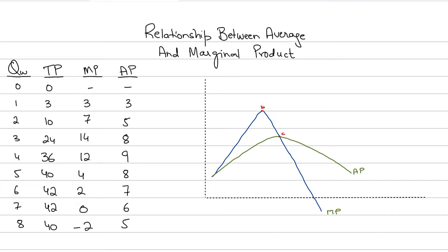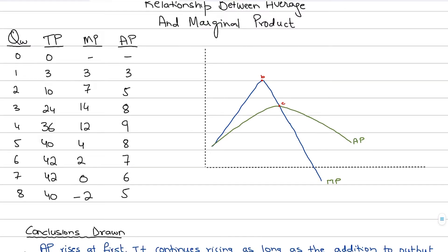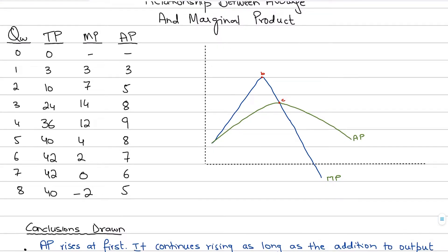In this video we're going to be discussing the relationship between the average product and the marginal product, and we will also be seeing how we are going to draw the average product curve. I've made a table here which shows the quantity of workers, the total product, the marginal product, and the average product. As we increase the quantity of workers, the total product initially rises, then rises at a faster rate before slowing down because of the law of diminishing returns, which means the marginal product is falling.